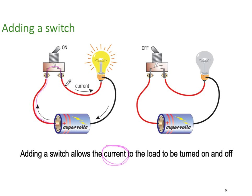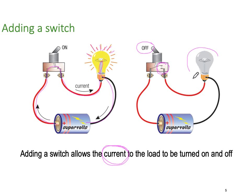In our first diagram we have current flow through our switch because it's closed, or on — up into our lamp, out and back to the battery. The result is our lamp is on. When we switch our lamp off you can see we've created an open circuit, therefore there is no current flow and our lamp is not operating. The important thing to pick up here is that a switch allows the current to the load to be turned on and off — it's the current we're turning on and off, nothing else.